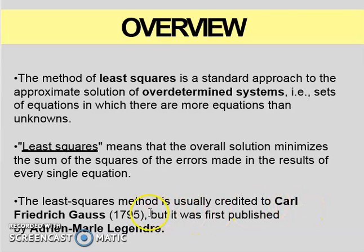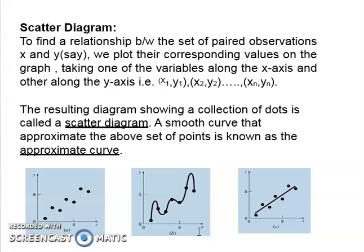The least squares method is usually credited to Karl Friedrich Gauss in 1795, but it was first published by Adrien-Marie Legendre. So Gauss first introduced the least squares method in 1795, and after that Legendre was the first to publish it.